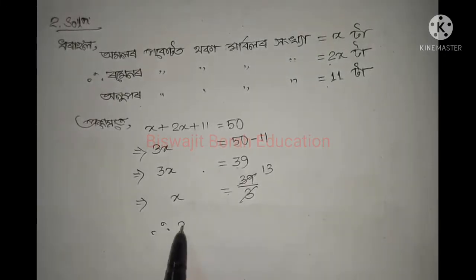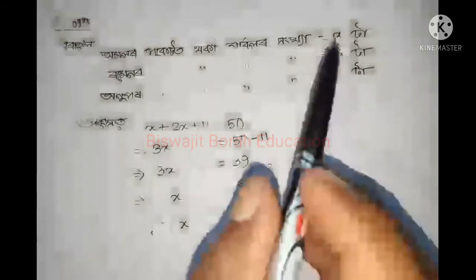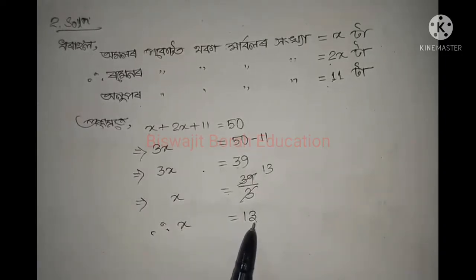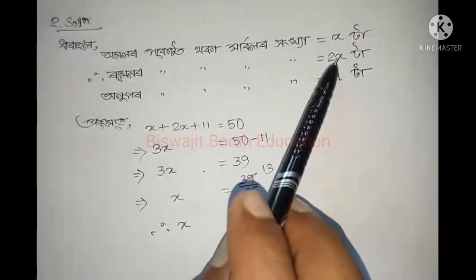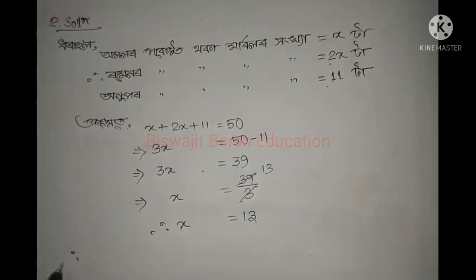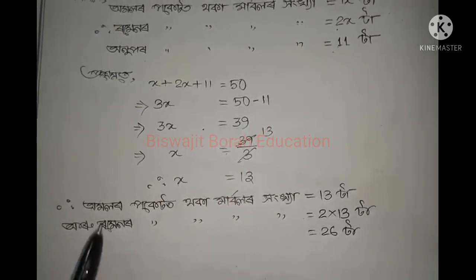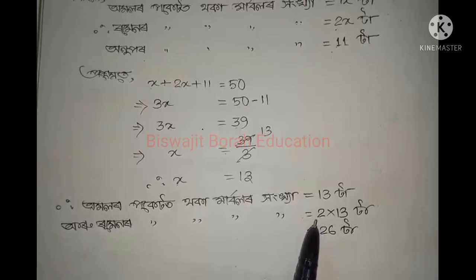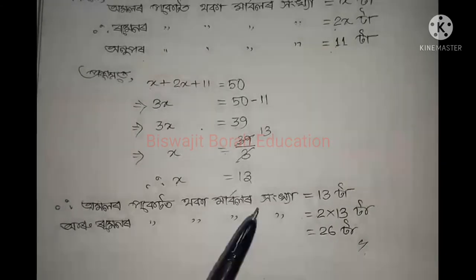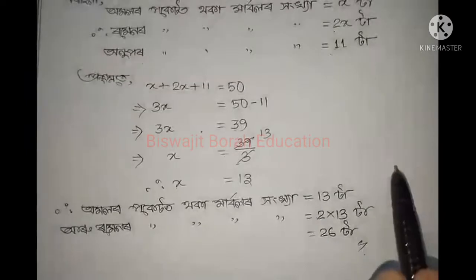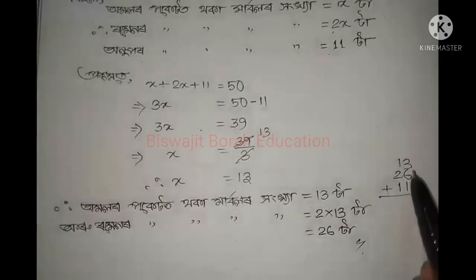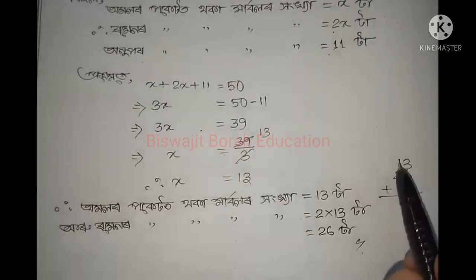So 3x equal to 39, so x equal to 39 divided by 3, so x is equal to 13. One of the values equals 2x.